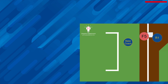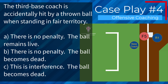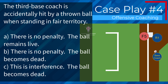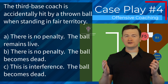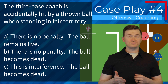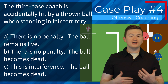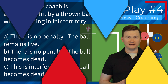Case play number four: the third base coach is accidentally hit by a thrown ball when standing in fair territory. Is this A, there is no penalty and the ball remains live; B, there is no penalty and the ball becomes dead; or C, this is interference and the ball becomes dead? The correct answer is C — this is interference because he is in fair territory and the ball will become dead immediately.